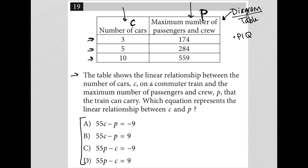The question is telling us, for instance, that for the first row, when C equals 3, P equals 174. When C equals 5, P equals 284, and so on. When C equals 10, P equals 559. So that means I can take these values, this one for instance,